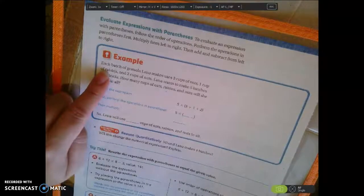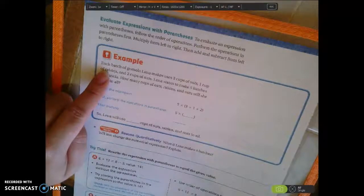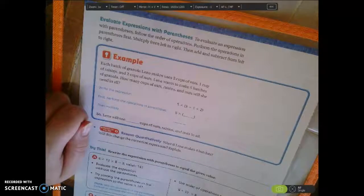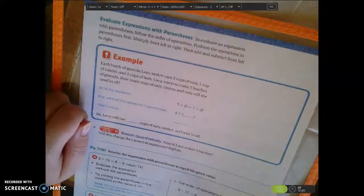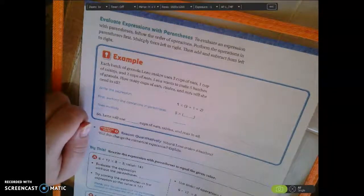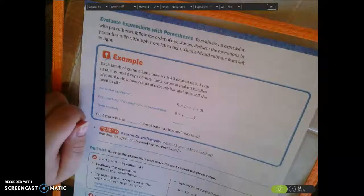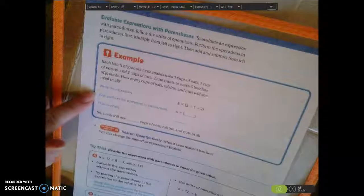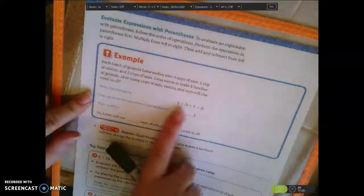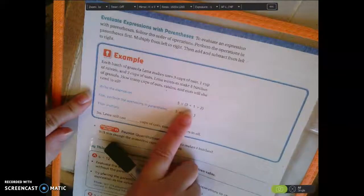Here's our example. Each batch of granola Lena makes uses 3 cups of oats, 1 cup of raisins, and 2 cups of nuts. Lena wants to make 5 batches of granola. How many cups of oats, raisins, and nuts will she need in all? Write the expression. So we have 5 times the quantity 3 plus 1 plus 2.